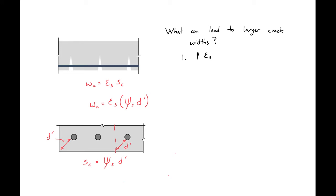The first thing that will lead to larger crack widths is a larger strain in our steel, epsilon s. You can see that if we have a larger epsilon s, we'll have a larger crack width. Generally, this is not something we can modify with our design because we're typically always using grade 60 reinforcement.